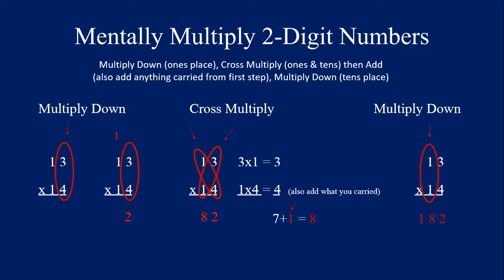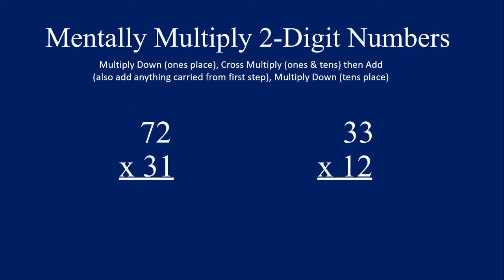If you can't remember the answers as you work this out in your head — like if you think 3 times 4, that's 2 in the ones column, and then you move to the cross multiply and forget what this answer is — go ahead and write it down to start with. Write that 2 down so you don't forget, and the more you practice you'll be able to do it in your head.